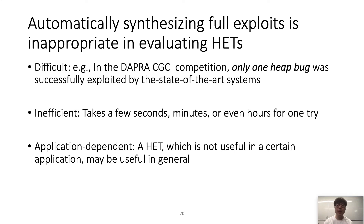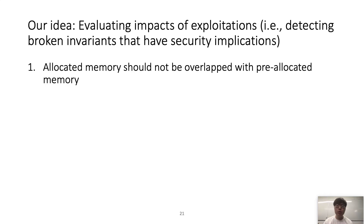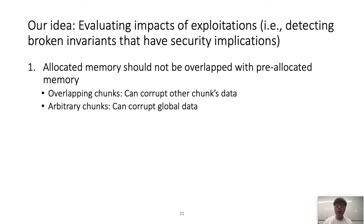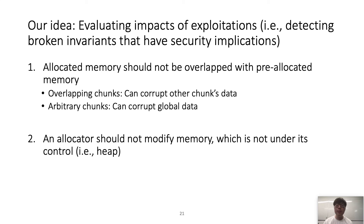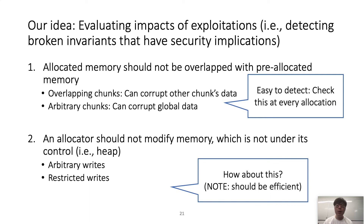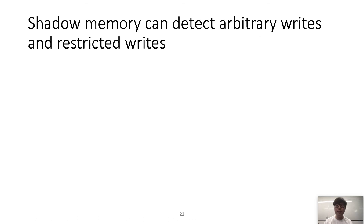Finally, automatic exploit generation is application dependent. However, a heap exploitation technique that is useless in one application might be useful in others. To overcome these issues, we evaluate the impacts of exploitation instead of making a full exploit. These impacts are broken invariants with security implications. The first invariant is that allocated memory should not overlap with pre-allocated memory — a violation results in an overlapping chunk or arbitrary chunk. The second is that an allocator should not modify memory outside its control — a violation results in arbitrary or restricted writes.